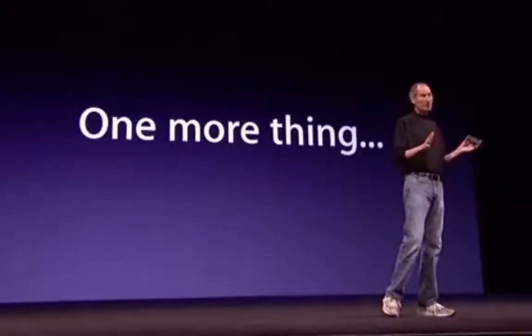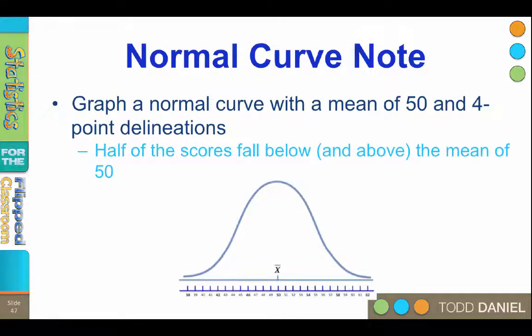But there is one more thing that I want to tell you about the normal curve. And that is that the normal curve can be overlaid with a number line, and this is where things get really interesting and quite useful. If we have a normal curve, we can add the value of the mean right in the middle where it belongs. In this example, we're going to imagine that our mean is 50. So then we could lay out a number line with four-point delineations. Half of our scores will always be above the mean, or above 50. The remaining half of the scores will always be below 50. That is what a measure of central tendency tells us.